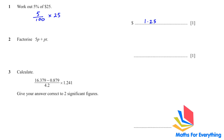Next, factorize 5p plus pt. When factorizing, write a bracket — what is common is p, so p goes outside the bracket, and what is remaining is 5 plus t.